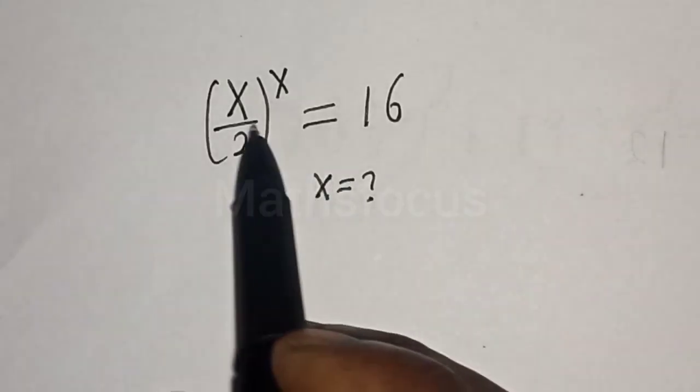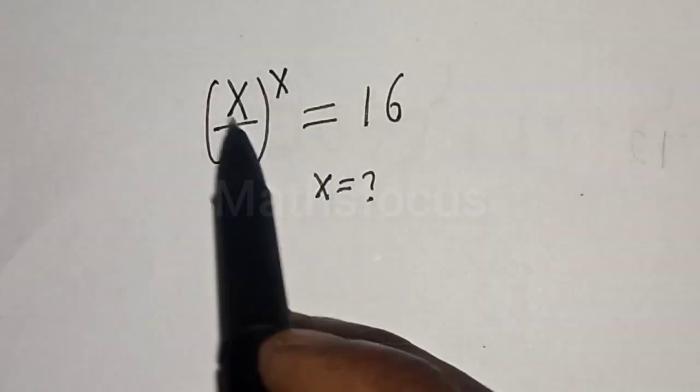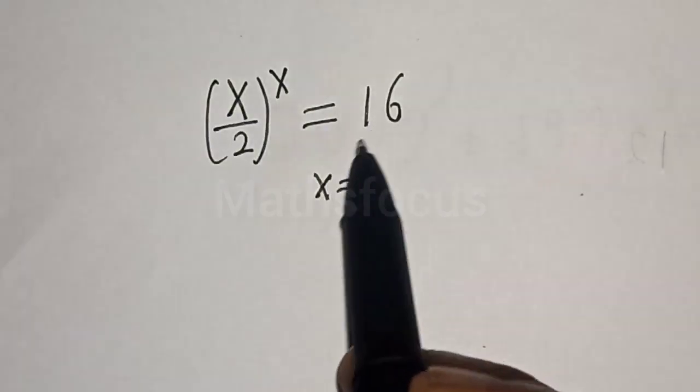Hello, we want to find the value of S from this equation. S divided by 2 to the power of X is equal to 16.